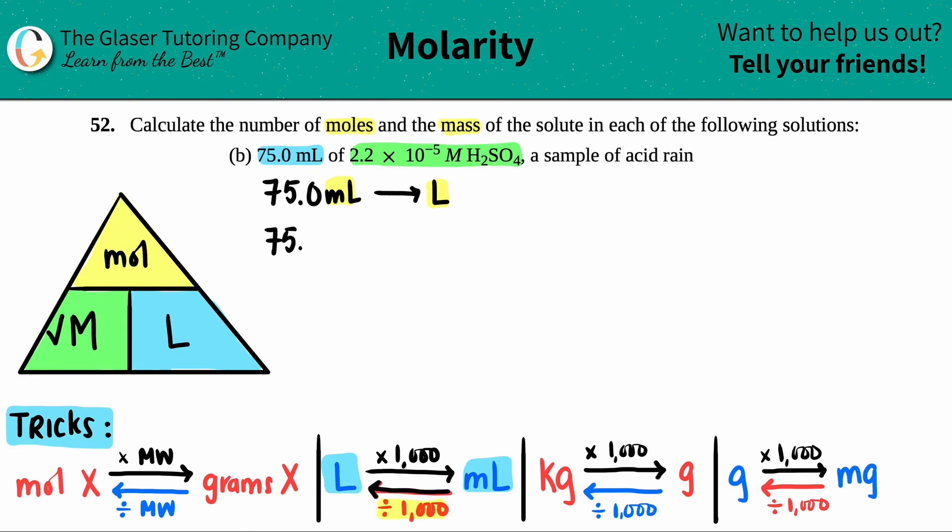I'm just going to take 75.0 and divide by a thousand. Similarly, you can take your decimal in your original number and move it to the left three times, filling in the place markers with zeros. Either way, this would be 0.075 liters. These numbers are equivalent to each other—75 milliliters is the same as 0.075 liters.